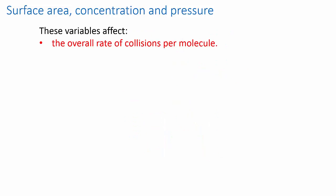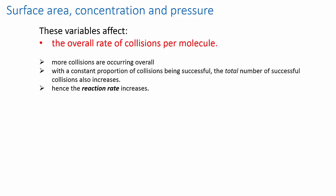To sum this up, increasing surface area concentration or pressure has the effect of increasing the number of collisions that each molecule undergoes. If the chance of a successful collision remains the same, but collisions happen more frequently, then successful collisions will also occur more frequently. This means the reaction goes faster.